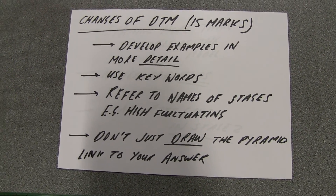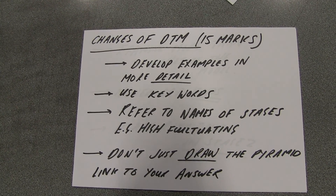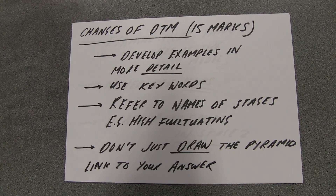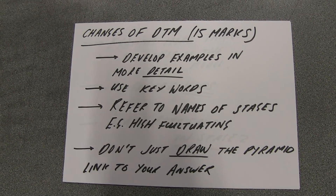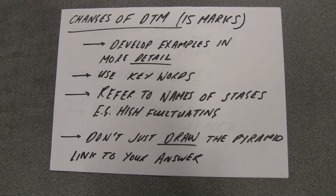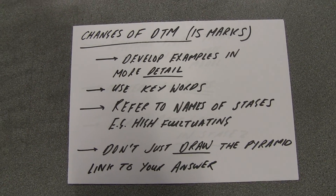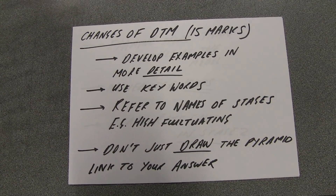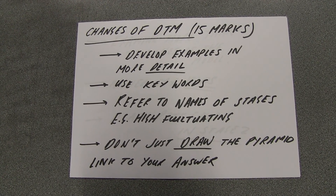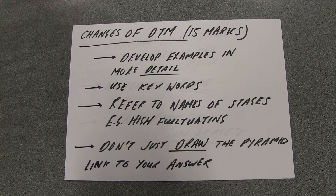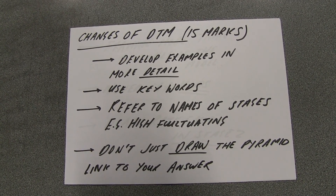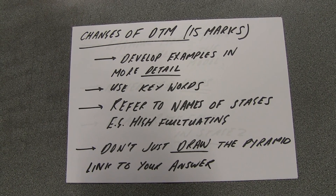Now we get to the big 15 marker. There was one question which talked about the changes within the demographic transition model. You've done a question like this before and you started to draw population pyramids — this was good. I don't think there was a single person that didn't draw the population pyramids. However, you need to link those population pyramids to your answers. There's no point in just drawing it and saying 'this is stage two.' You've got to actually explain what that population pyramid shows you and link it to each of those different stages.